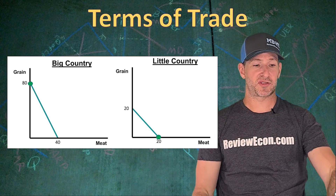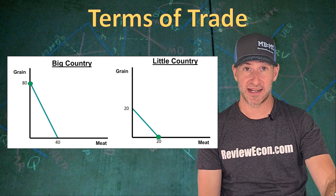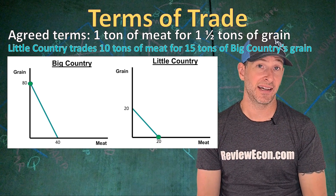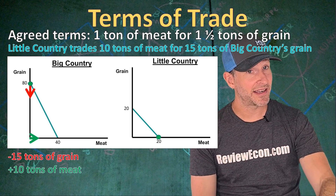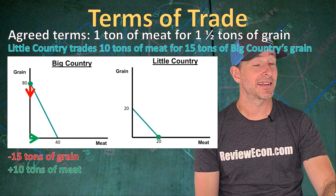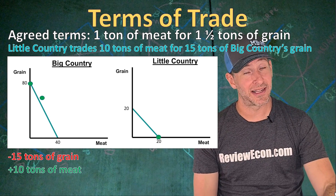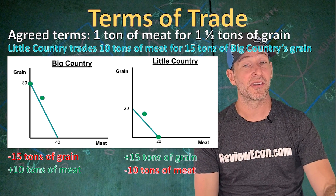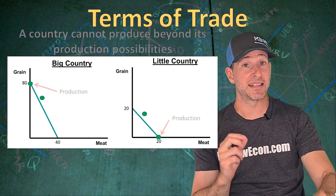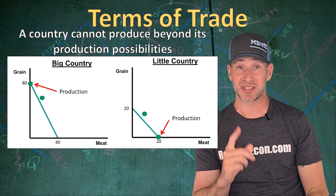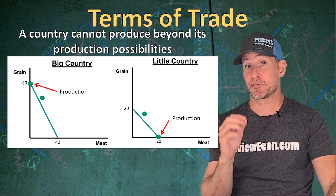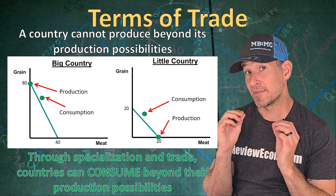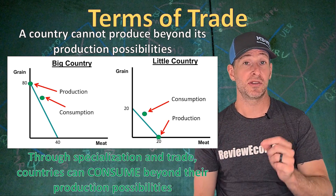Let's say both countries agree on mutually beneficial terms where one ton of meat is worth one and a half tons of grain. Little Country trades 10 tons of meat for 15 tons of Big Country's grain. Big Country loses 15 tons of grain and gains 10 tons of meat, consuming at a point outside their production possibilities curve. Little Country gains 15 tons of grain and loses 10 tons of meat, also consuming outside their curve. While it is impossible to produce outside one's PPC, through specialization and trade it is possible to consume outside it — showing the benefit of comparative advantage.